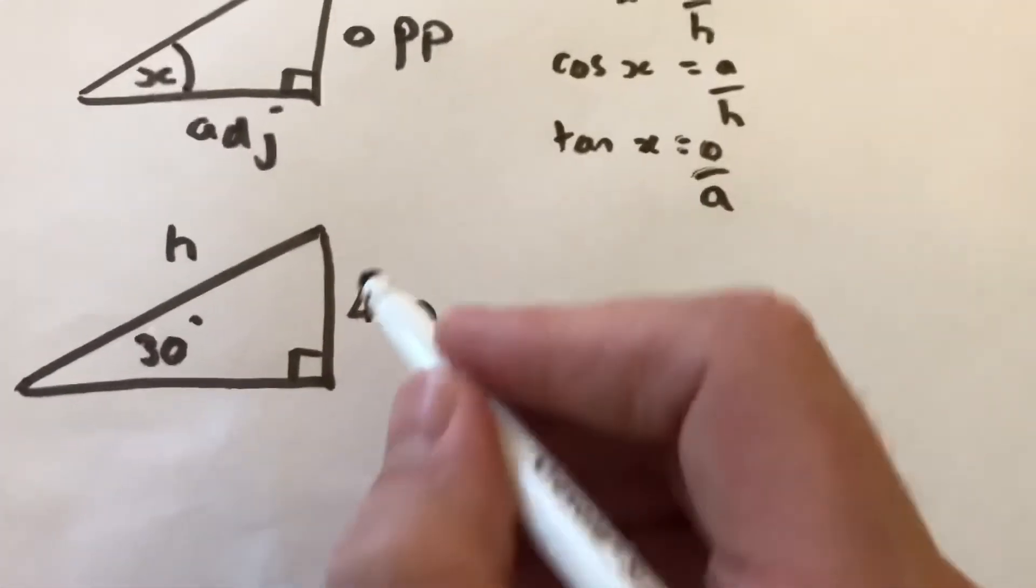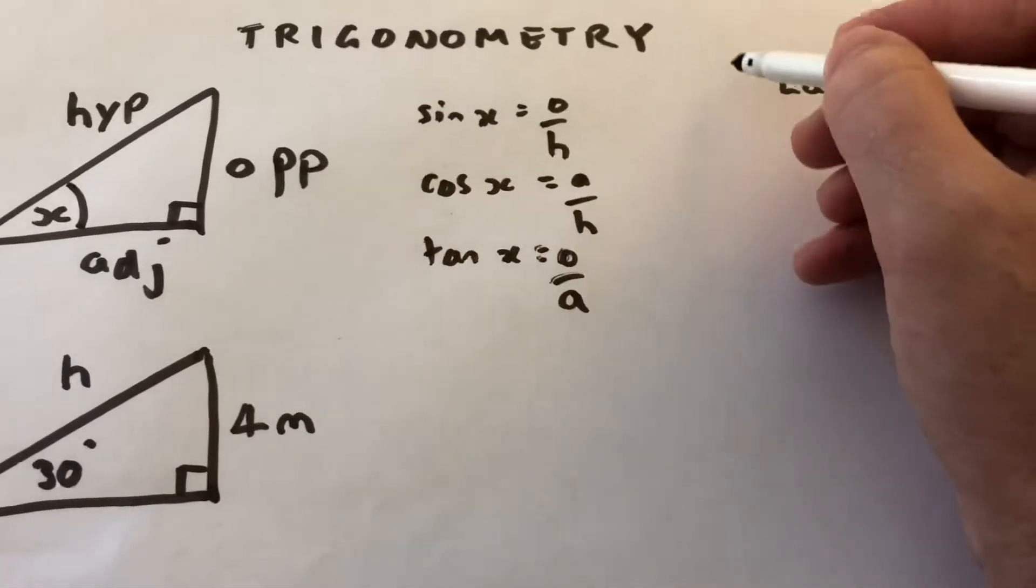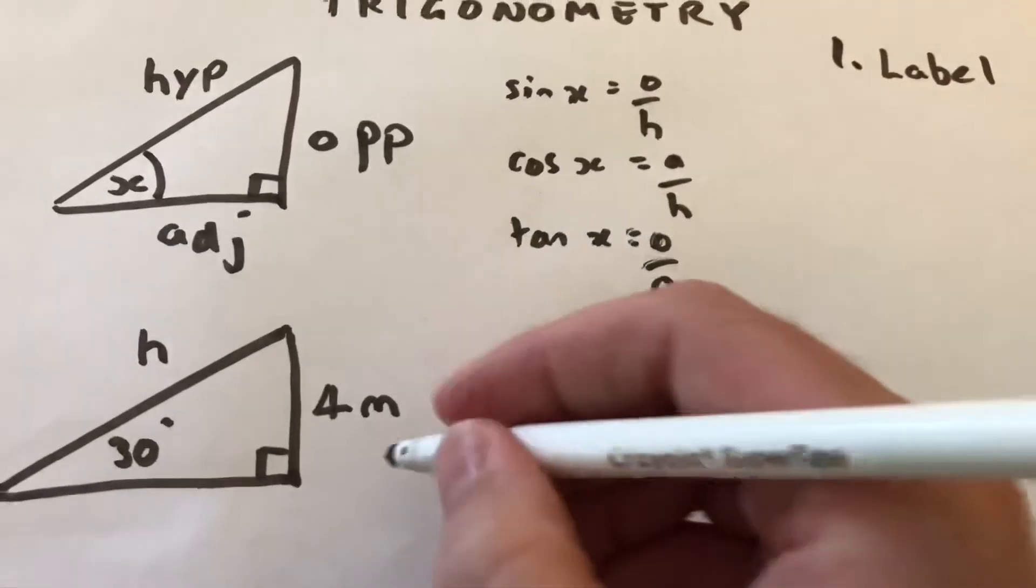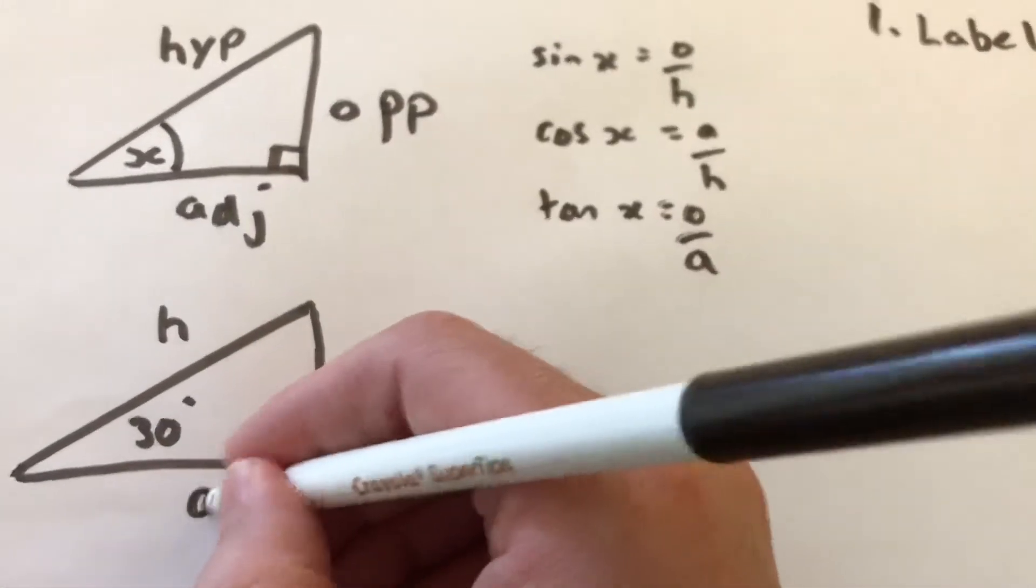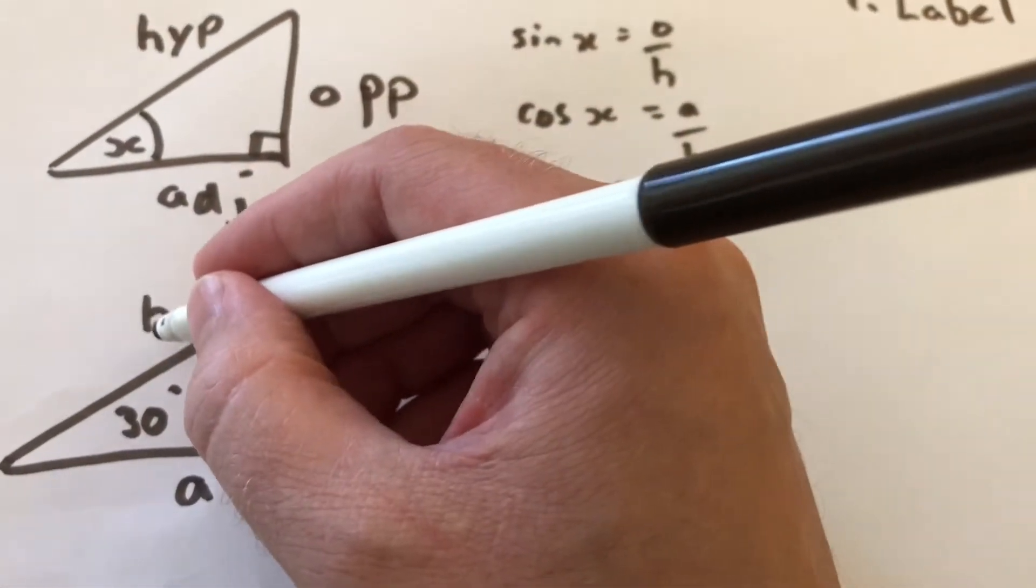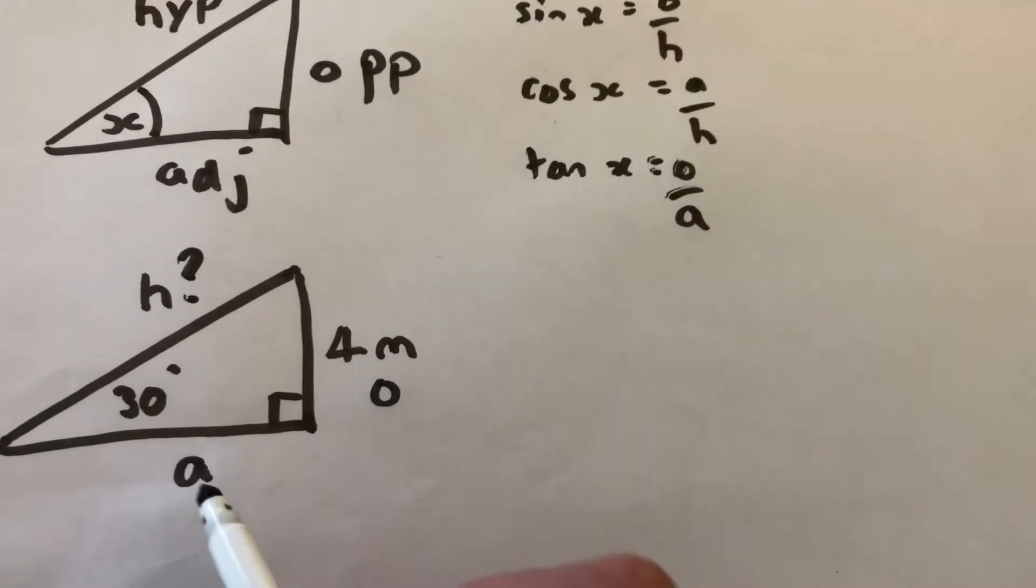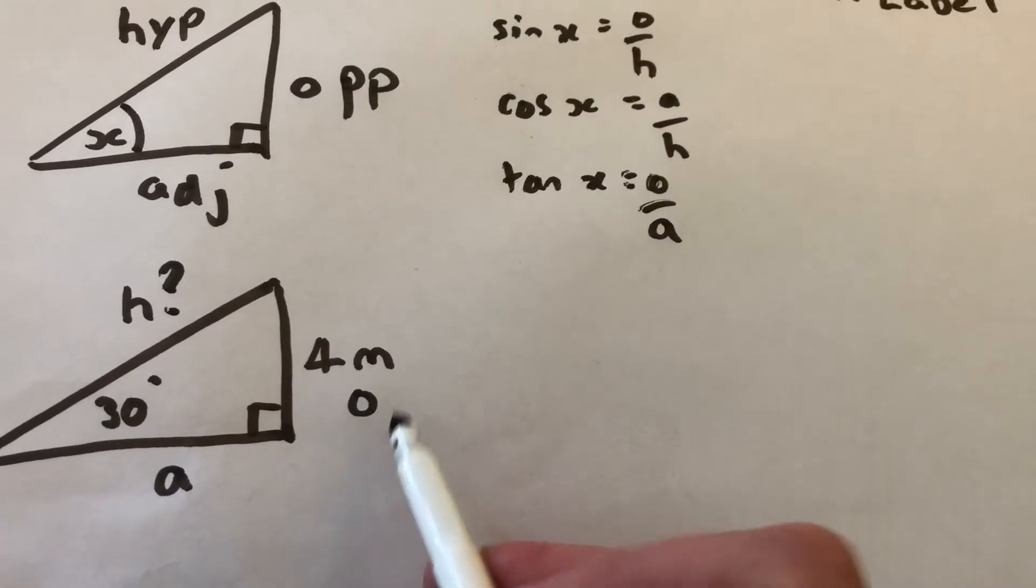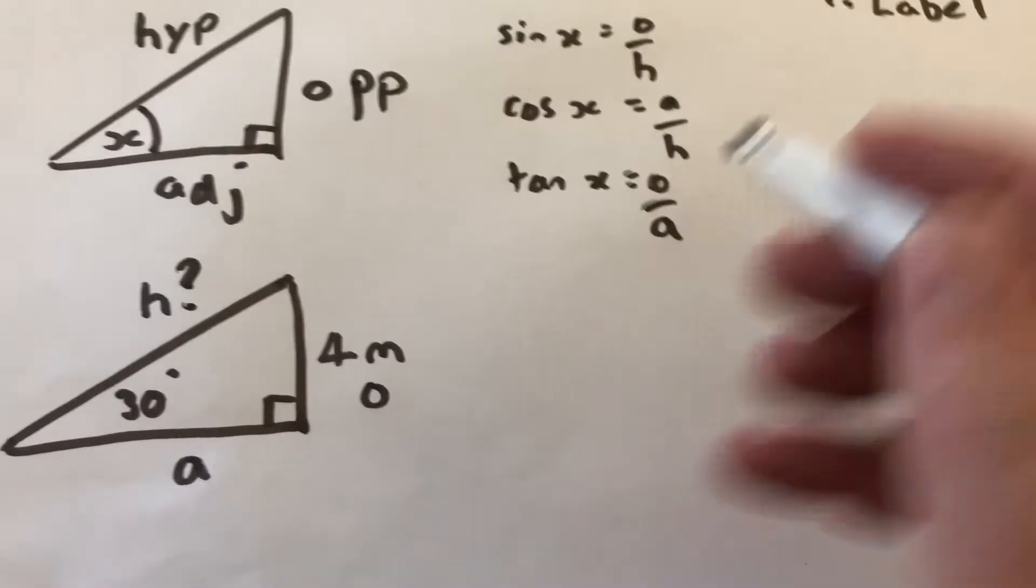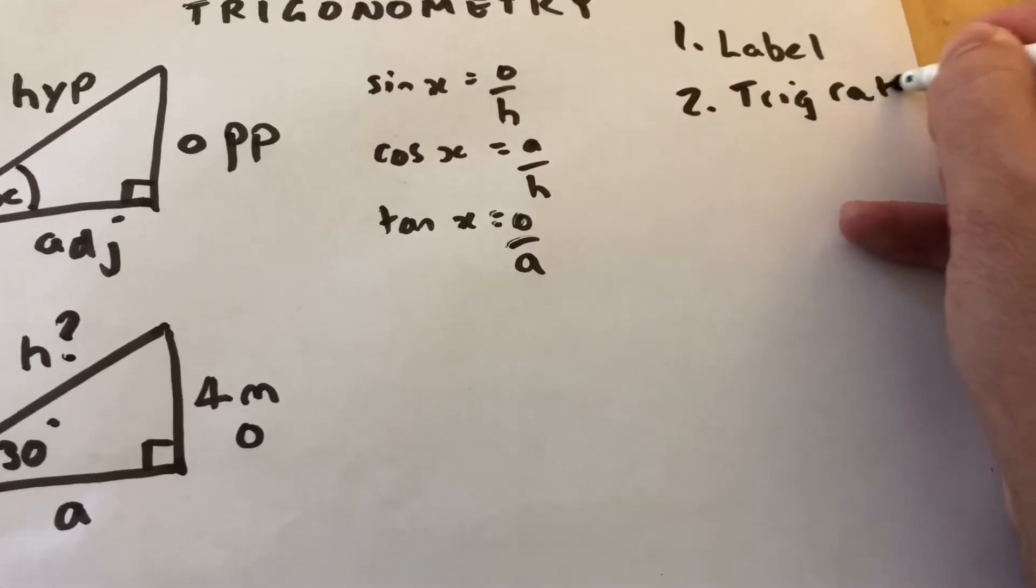Imagine you have a right angle triangle with an angle of 30 degrees. First thing I'd do is label that triangle. That's the O, that's adjacent which we don't need in this case, and that's the hypotenuse. Let's say we were asked for that. We don't need A, but we do know opposite. So what trig ratio do we need? That's the second thing we need to do.